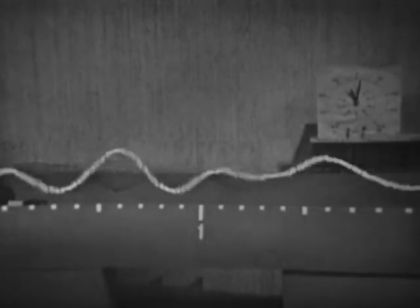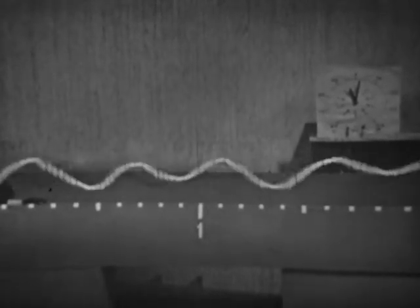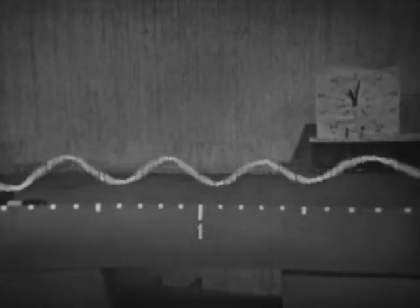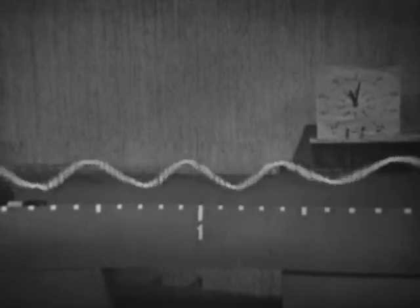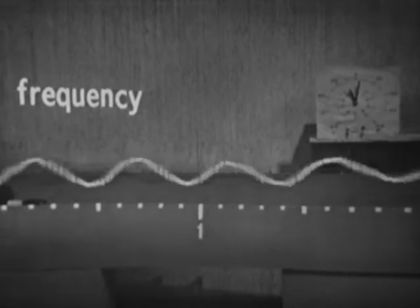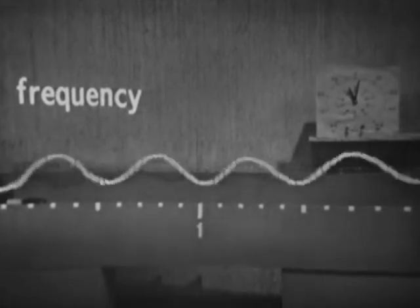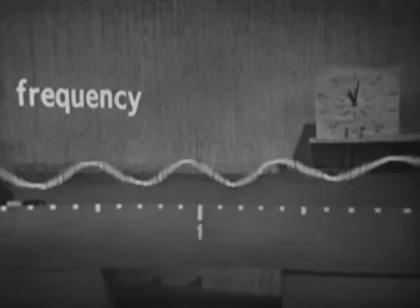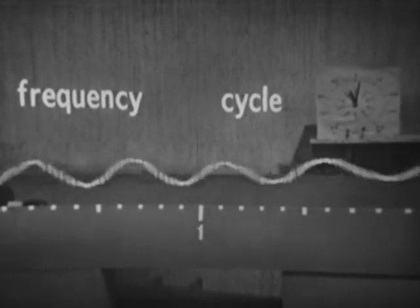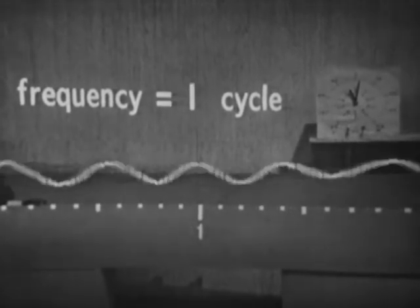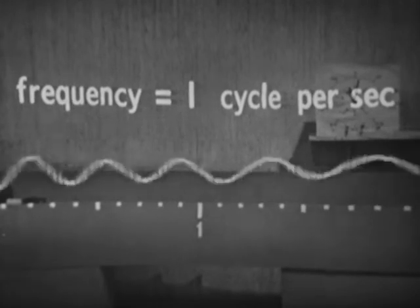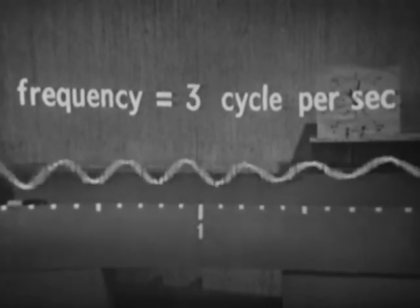You may think we've changed the speed at which the waves move along the machine, but we haven't. What have we changed then? Yes — the rate at which the end is vibrating: the frequency of the vibration. We now have about one complete vibration per second, and a complete vibration is called a cycle, so the frequency is one cycle per second. And if we speed the motor up, we can increase the frequency — say, to three cycles per second.